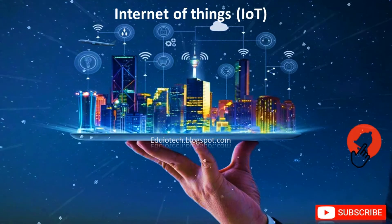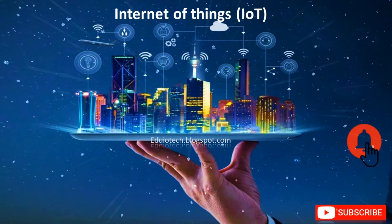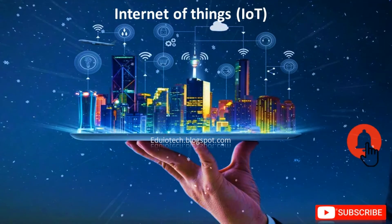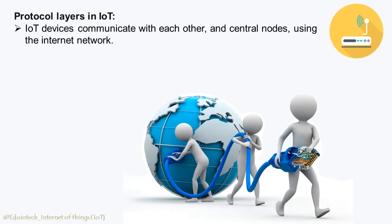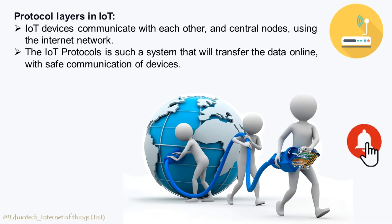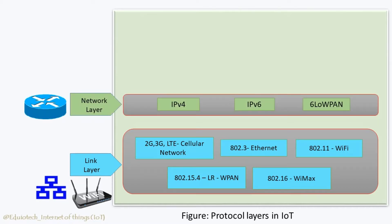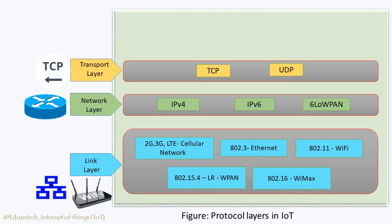Before going ahead, don't forget to subscribe to my YouTube channel EduIoTech and hit the bell icon to receive continuous updates. As discussed earlier, IoT devices communicate with each other and central nodes using the internet network. The IoT protocols is a system that will transfer the data online with safe communication of devices. Well-known protocols used by IoT-based applications in various layers are: Datalink layer, Network layer, Transport layer, and the Application layer. Let's have a look.